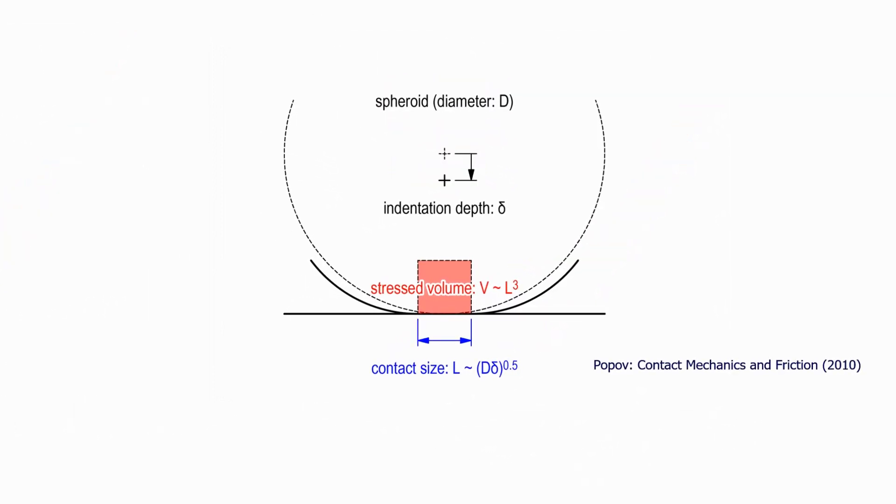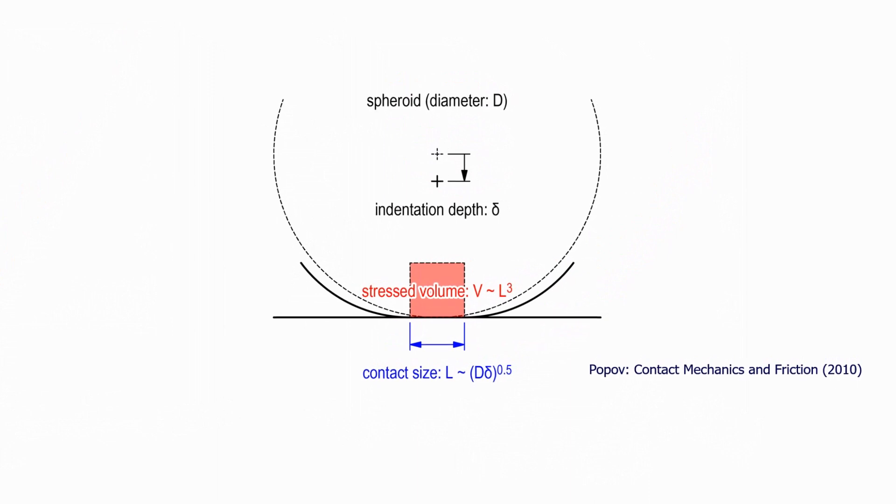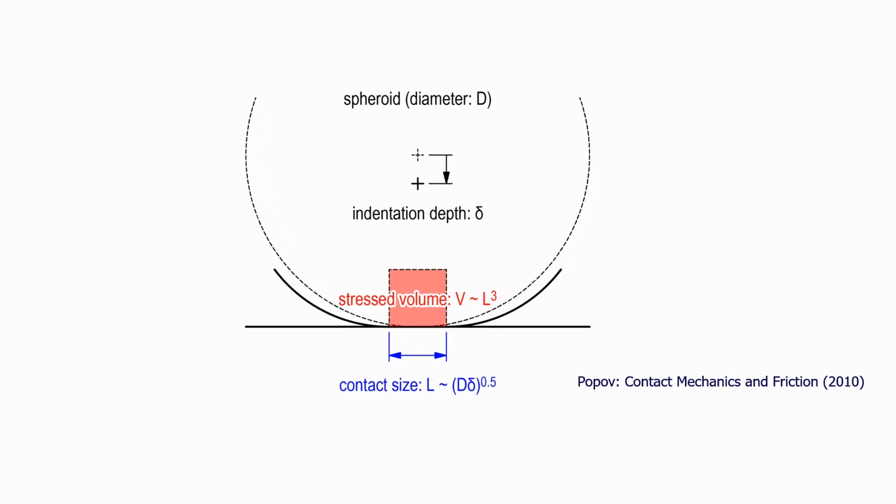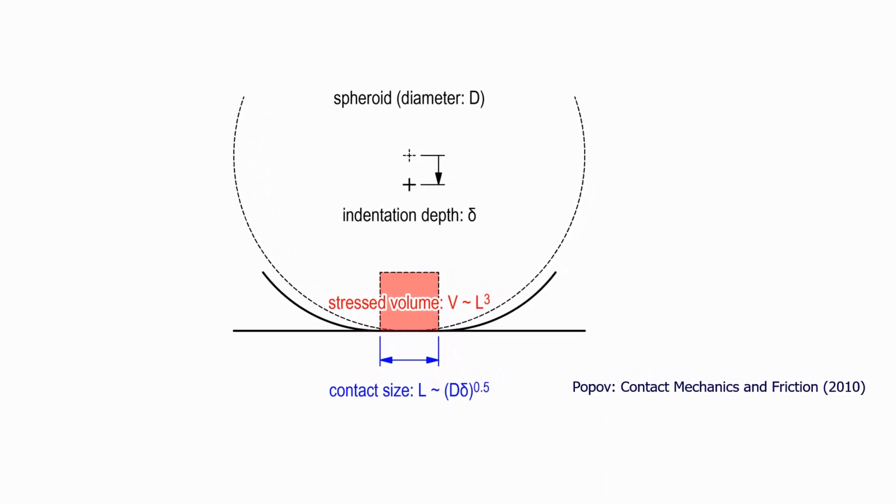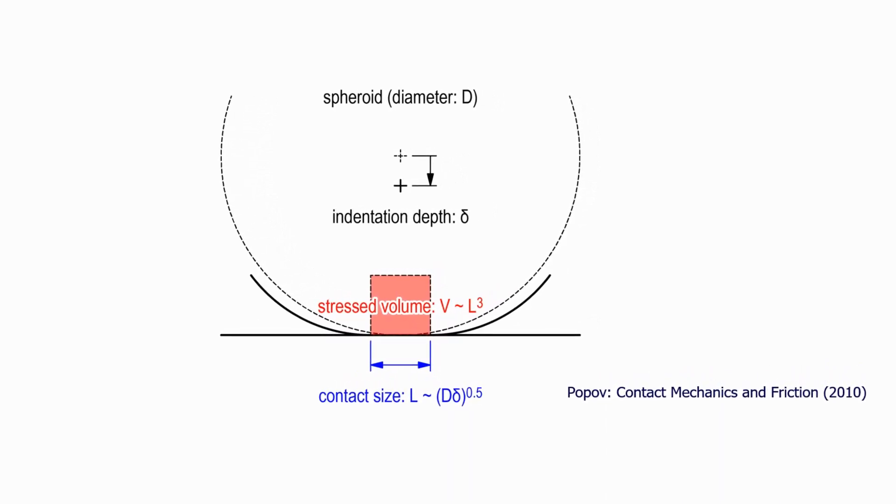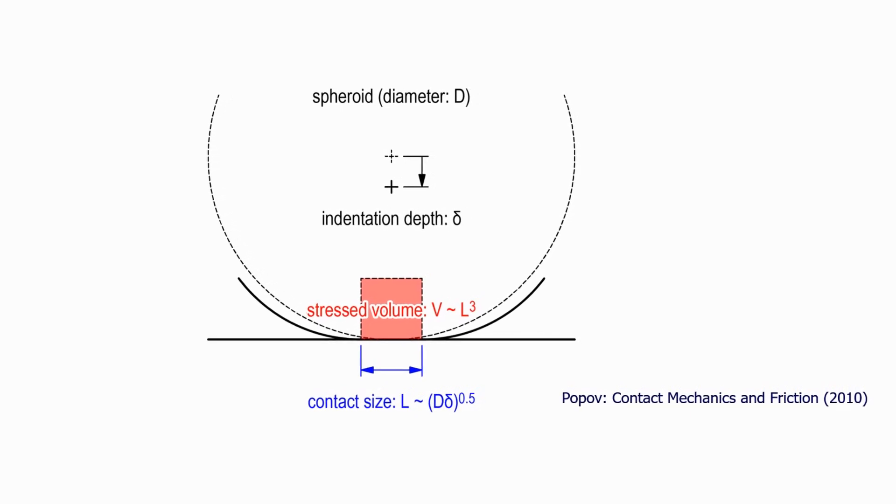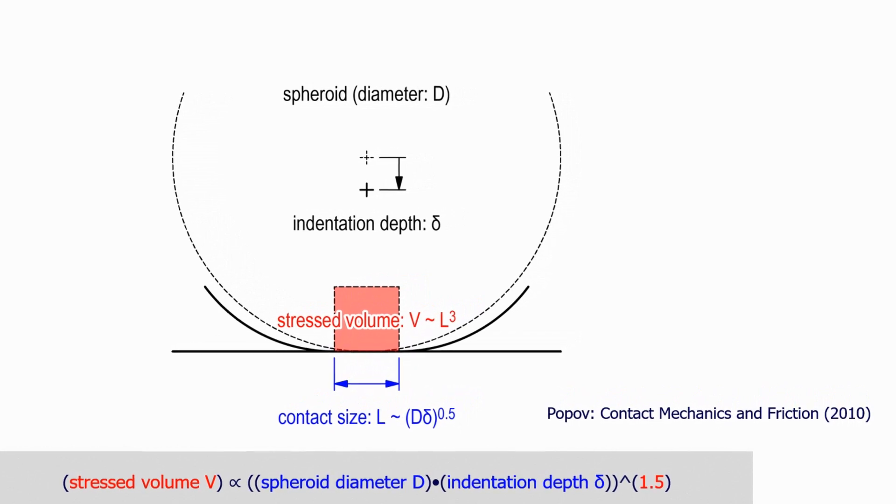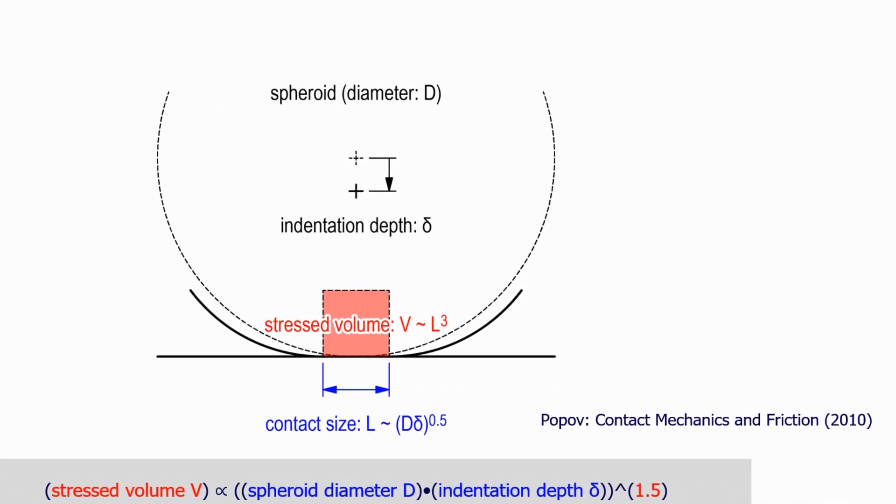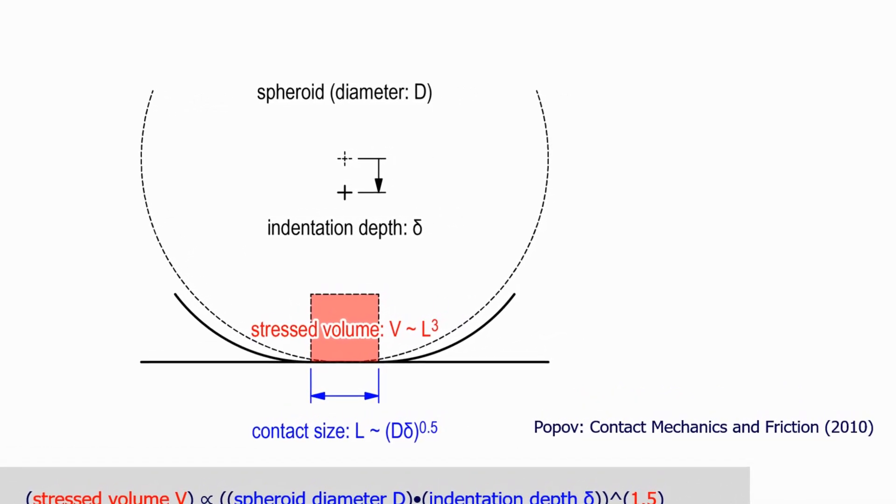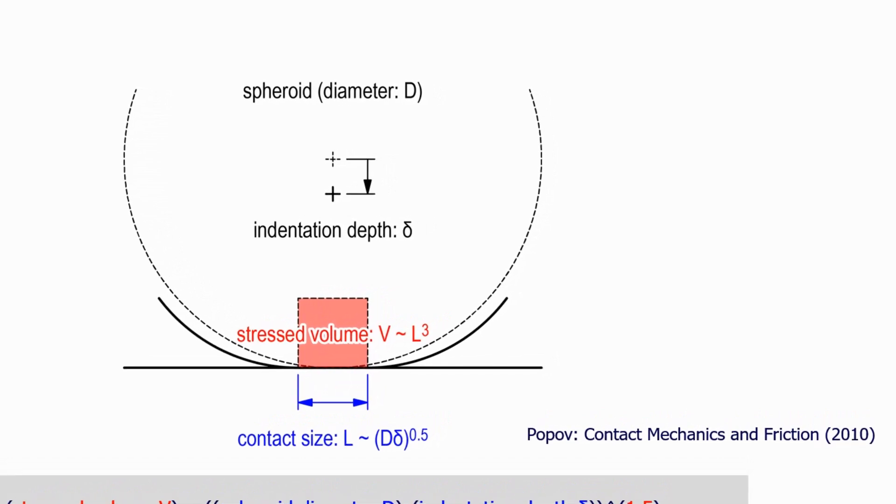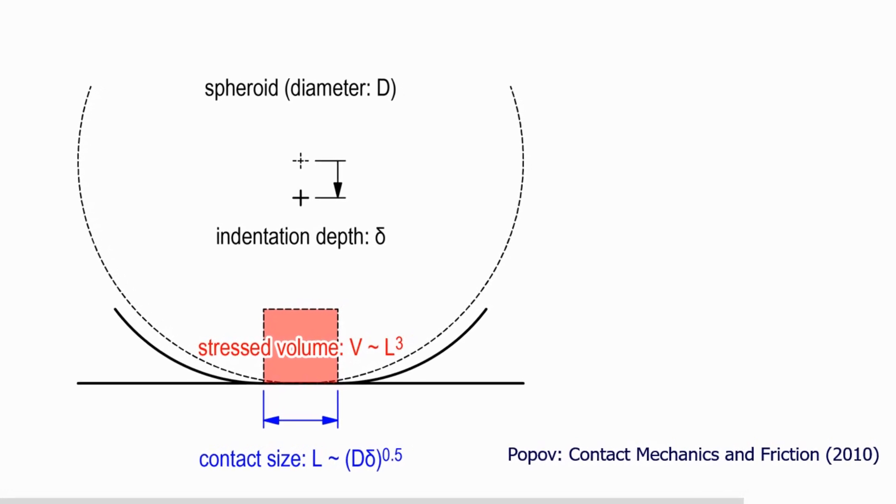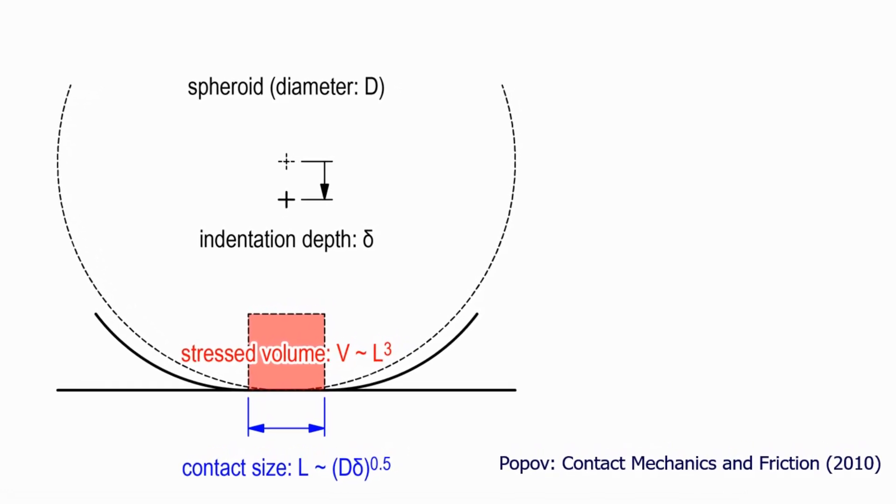However, the contact mechanics tells us that exactly this combination, diameter times indentation depth to the power 1.5, gives the volume of that part of spheroid which is significantly loaded. This means that the work of beating is proportional to the number of myocytes in the strongly stressed volume. With other words, only those myocytes perform the work which are loaded strongly.